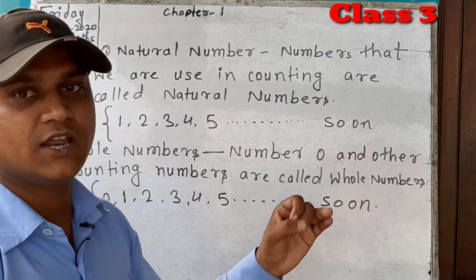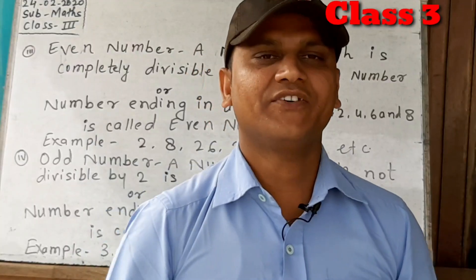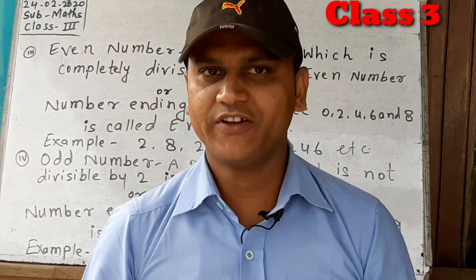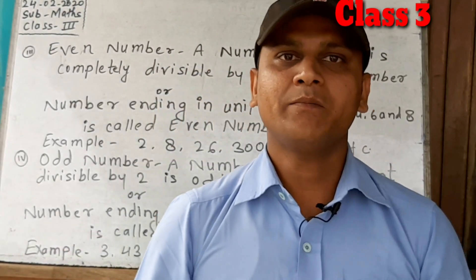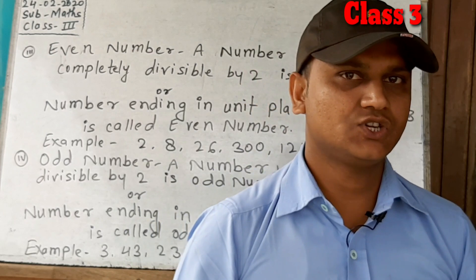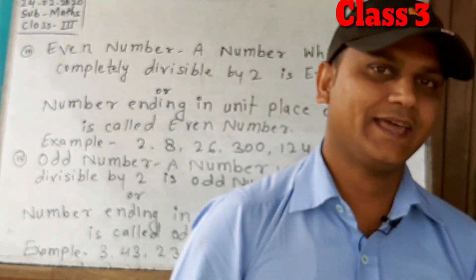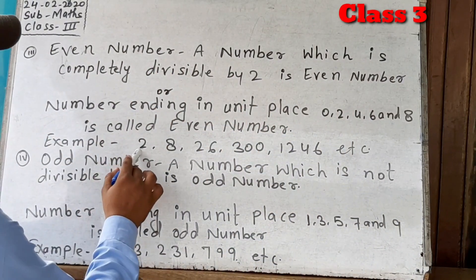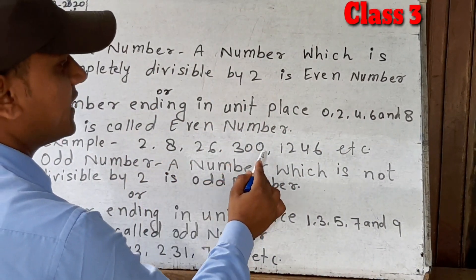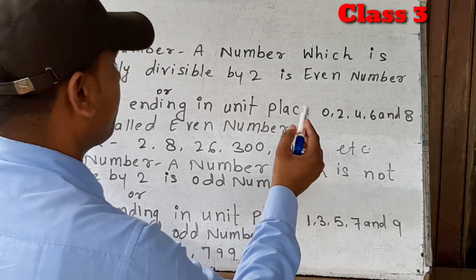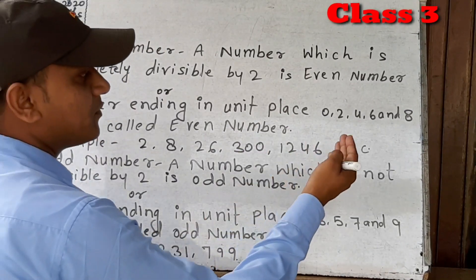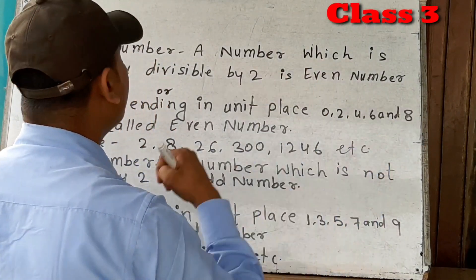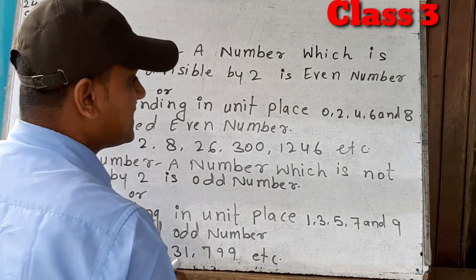Even numbers: a number which is completely divisible by 2 is called an even number. Or, a number ending in the unit place with 0, 2, 4, 6, or 8 is called an even number. Examples: 2, 8, 26, 300, 1246. A number whose last digit is 0, 2, 4, 6, or 8 is an even number.